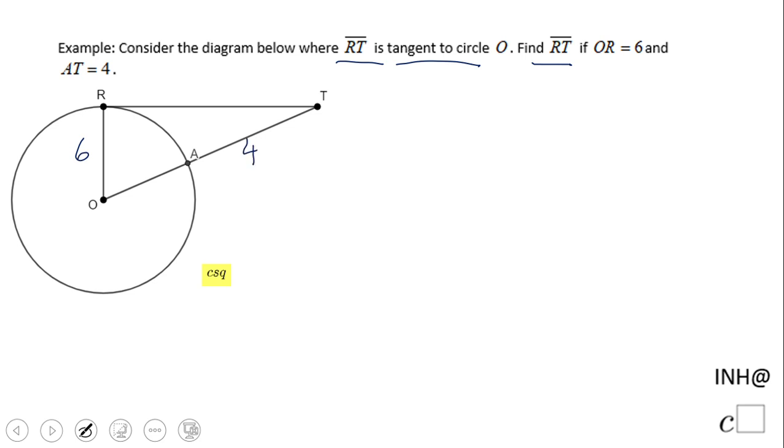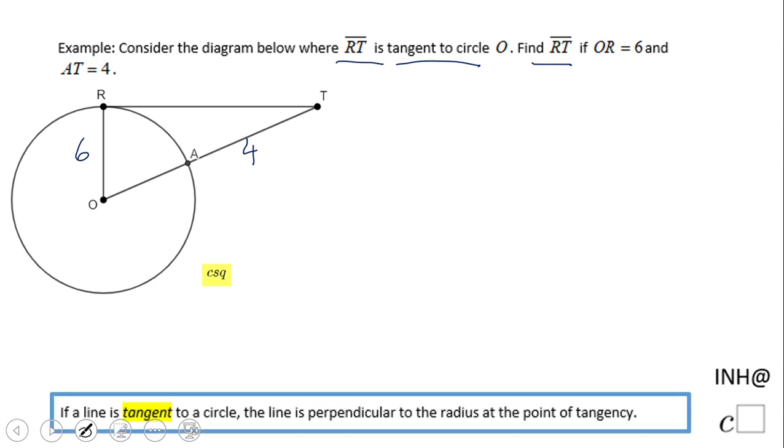So first of all, let's take a look at this property. If a line or a segment in our case is tangent to a circle, the line is perpendicular to the radius.